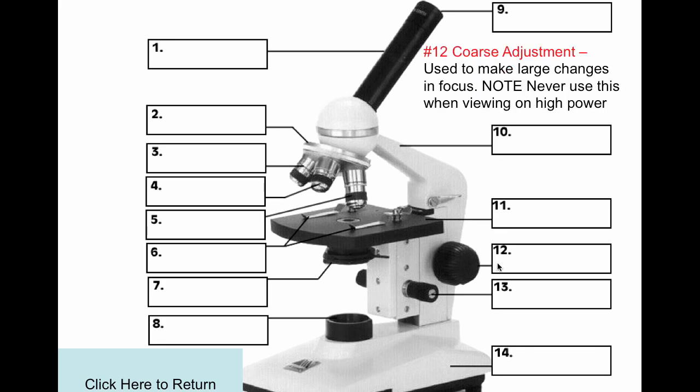Number 12 is called the coarse adjustment knob. It's used to make large changes in the focus. We use it on low power or medium power objective lenses. We never use this on the high power objective lenses because you could crack the objective lens, the slide you're looking at, or the stage opening piece of glass.